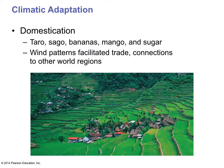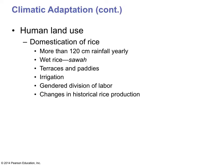The climate has facilitated the development of many different crops and materials, and wind patterns in the oceans have facilitated trade and connections to other world regions. This area used to be called the Spice Islands. Rice is a major crop — more than 120 centimeters of rainfall yearly fall in this area, creating ideal conditions. They terrace the rice, create water paddies to grow it; it is highly irrigated and requires a lot of labor.